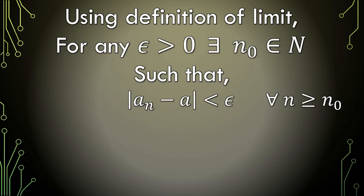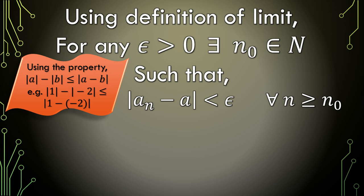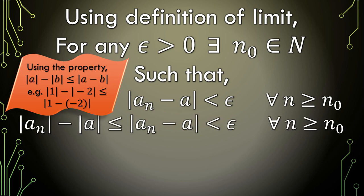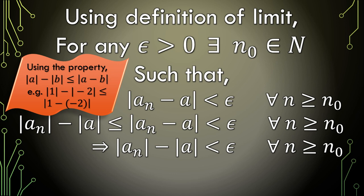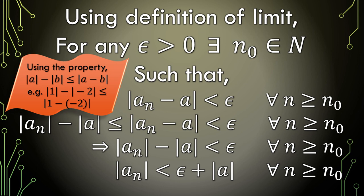Using that definition of limit, we can say for any epsilon > 0, there exists n_0 in the natural numbers such that |a_n − a|, the distance between the nth term and its limit, is less than epsilon for all n ≥ n_0. Now using the property of inequalities of real numbers — we know that |a| − |b| ≤ |a − b| — we get that |a_n| − |a| < epsilon for all n ≥ n_0, which gives us |a_n| < epsilon + |a|, just taking |a| to the right side of the inequality.